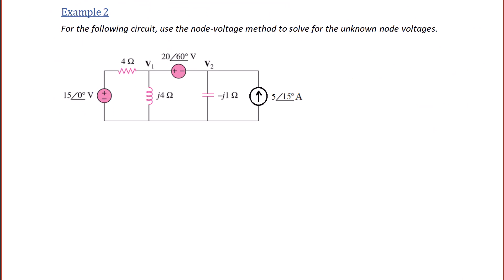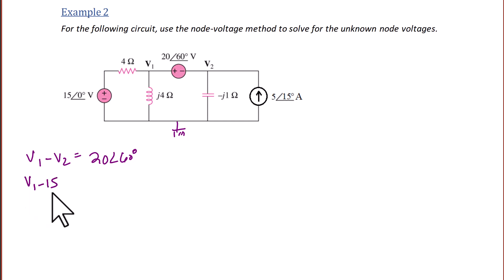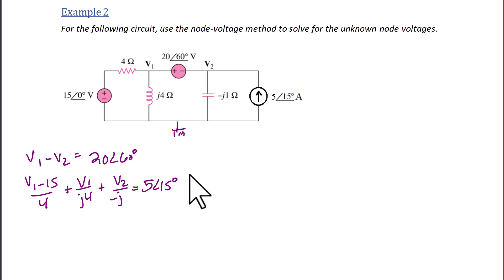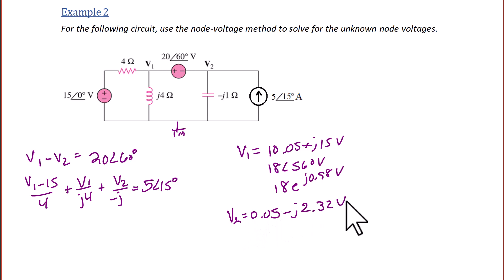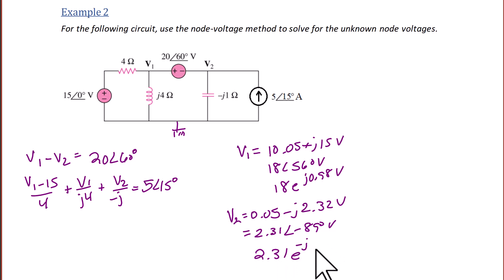Example 2: For the following circuit, use the node voltage method to solve for the unknown node voltages. There is a voltage source 20∠60° not tied to ground, so we have a super node. First, label ground. KVL at the super node: V1 − V2 = 20∠60°. KCL at the super node: (V1 − 15)/4 + V1/(j4) + V2/(−j) = 5∠15°. Solving: V1 = 10.05 + j15 V = 18∠56°, and V2 = 0.05 − j2.32 V = 2.31∠−89°.